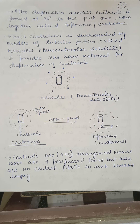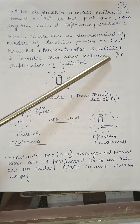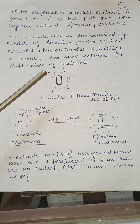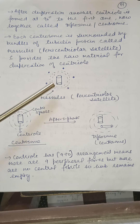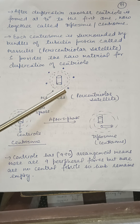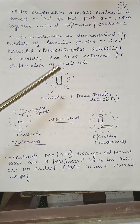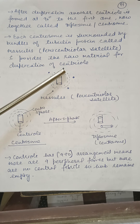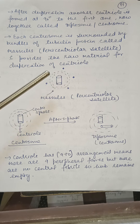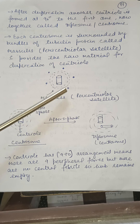Each centrosome is surrounded by bundles of tubulin protein called mesium. These mesiums provide the raw material for duplication of centrioles.